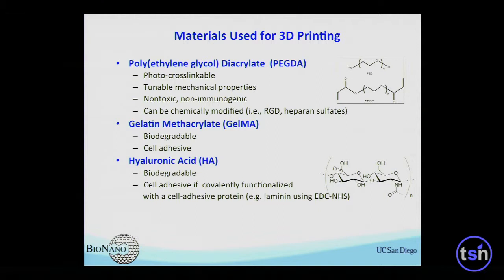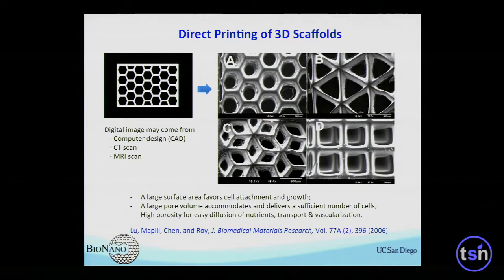We use a couple of biomaterials — for instance, polyethylene glycol, gelatin methacrylate, and hyaluronic acid. Those are all biocompatible materials. Some of them are biodegradable, some are not degradable, so depending on the need, we can develop a range of biological scaffolds with designer mechanical properties and other properties.